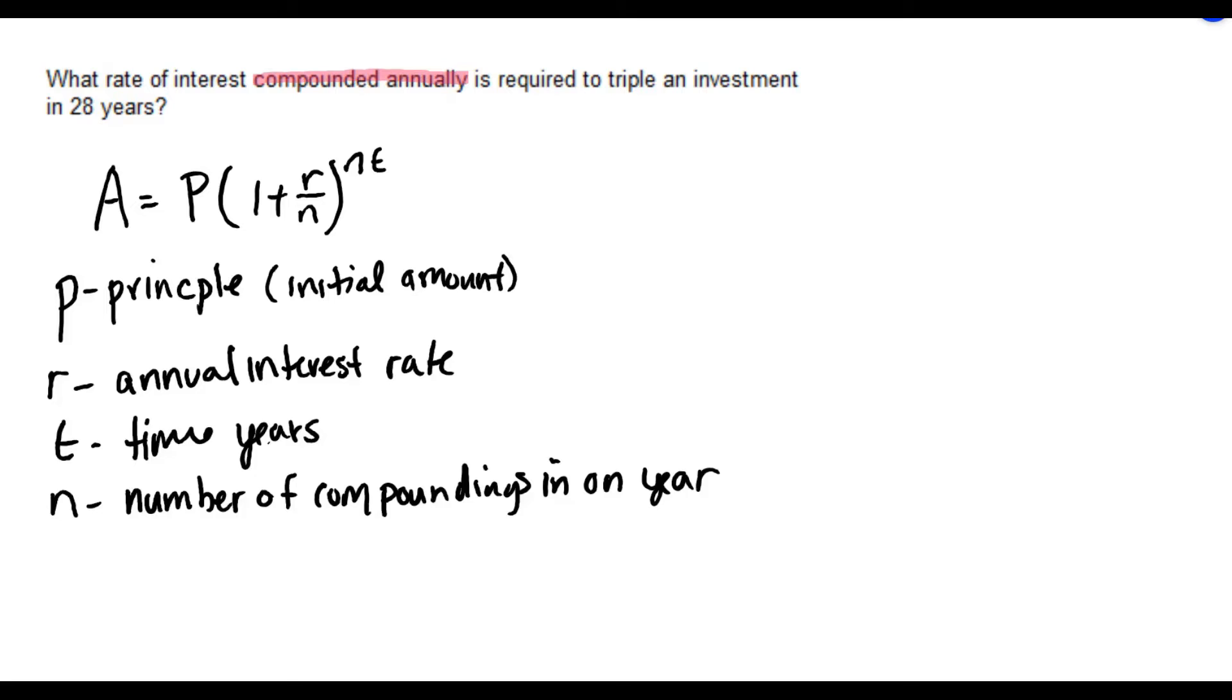Or some accounts could be quarterly. In that case N would be 4 because interest would be added or compounded four times in a year.